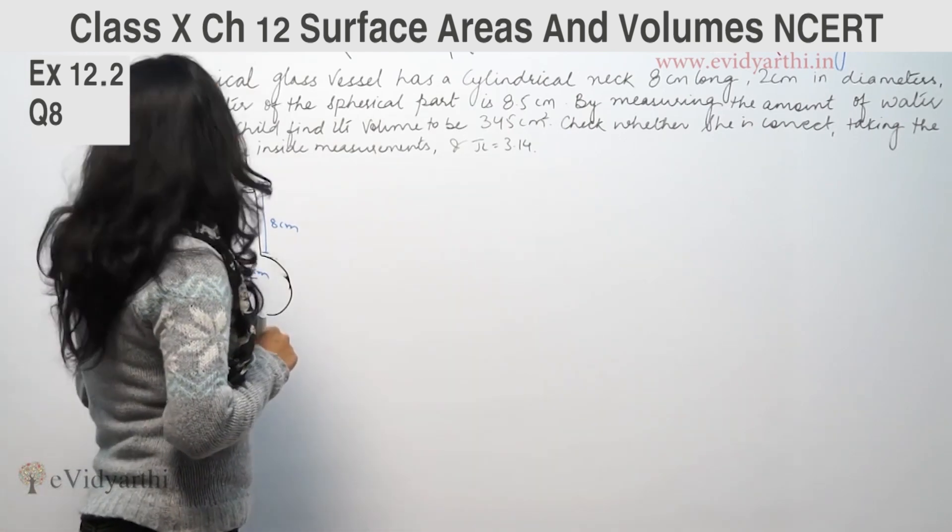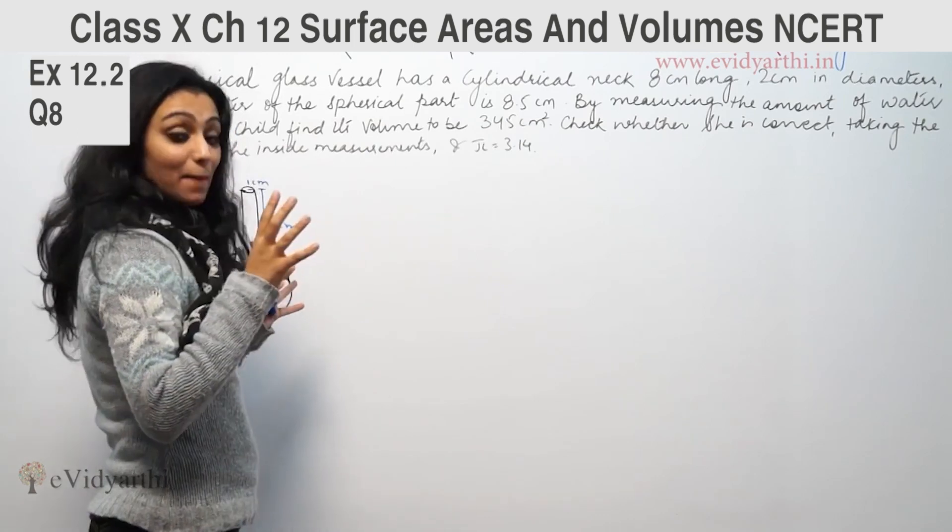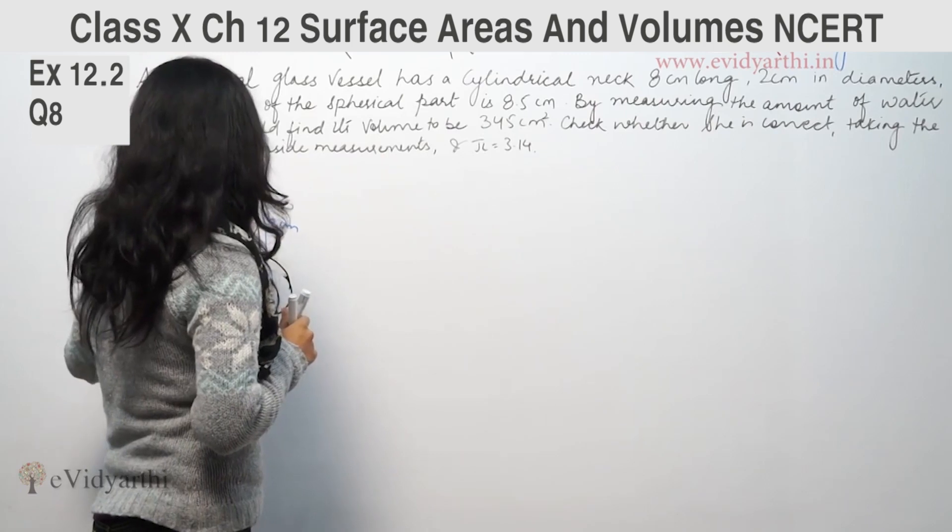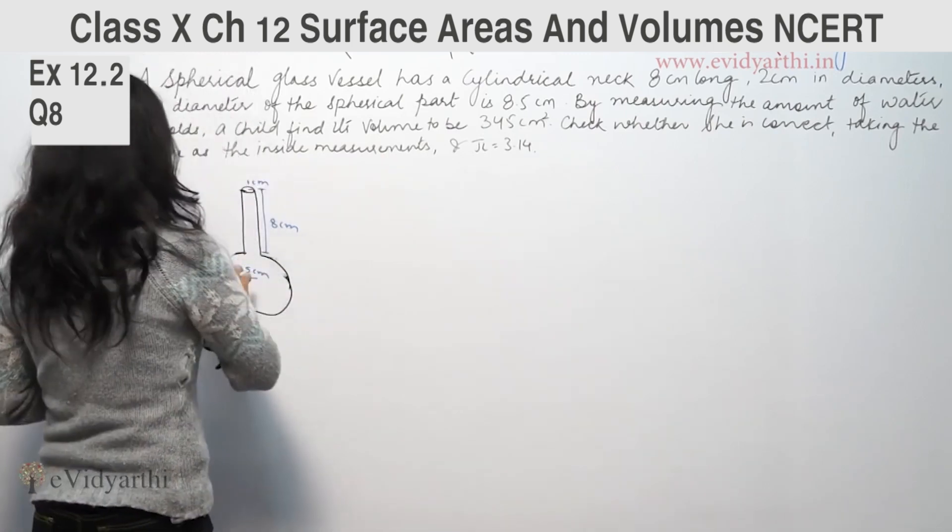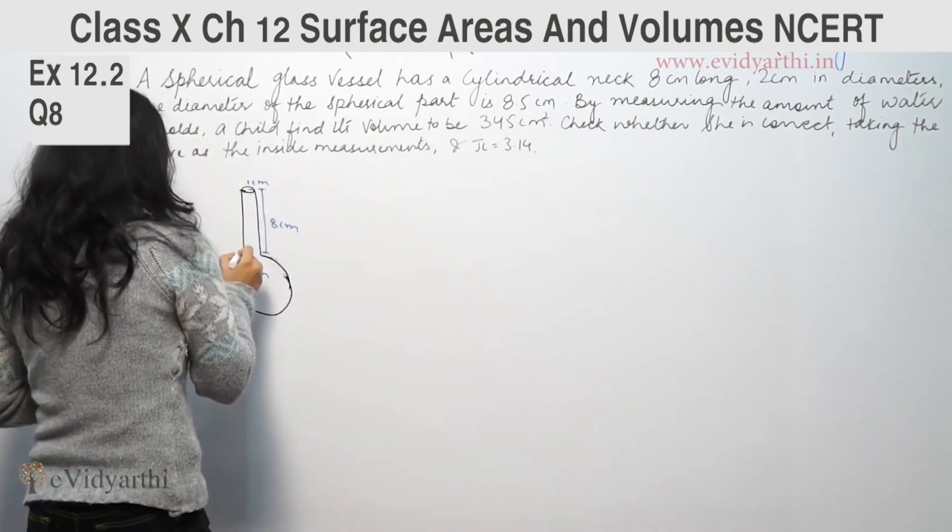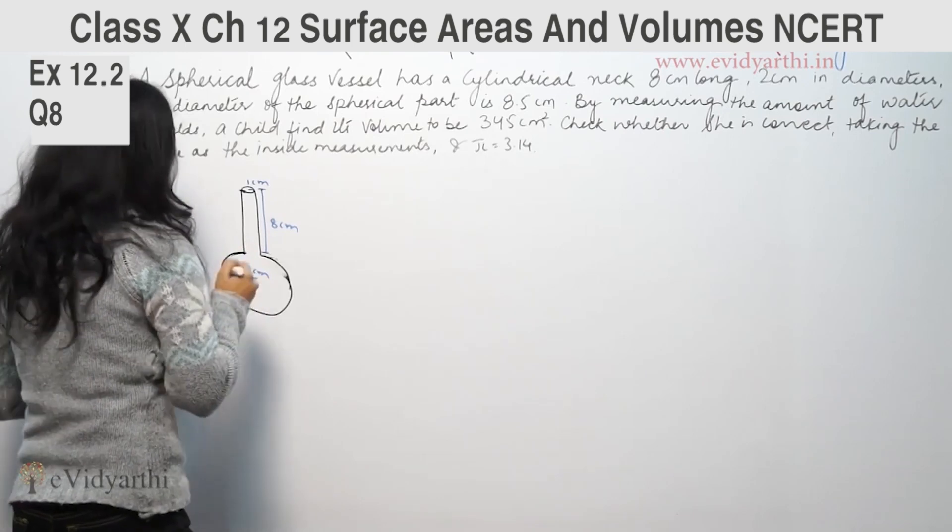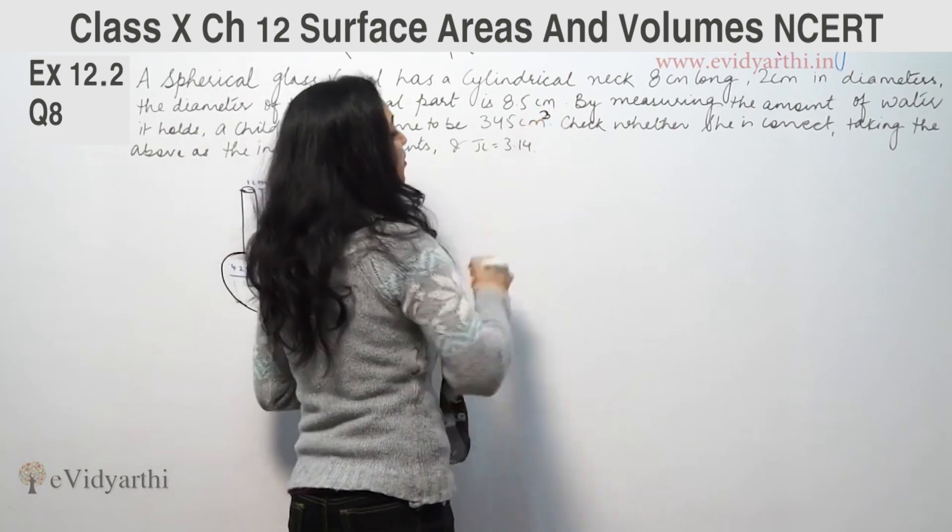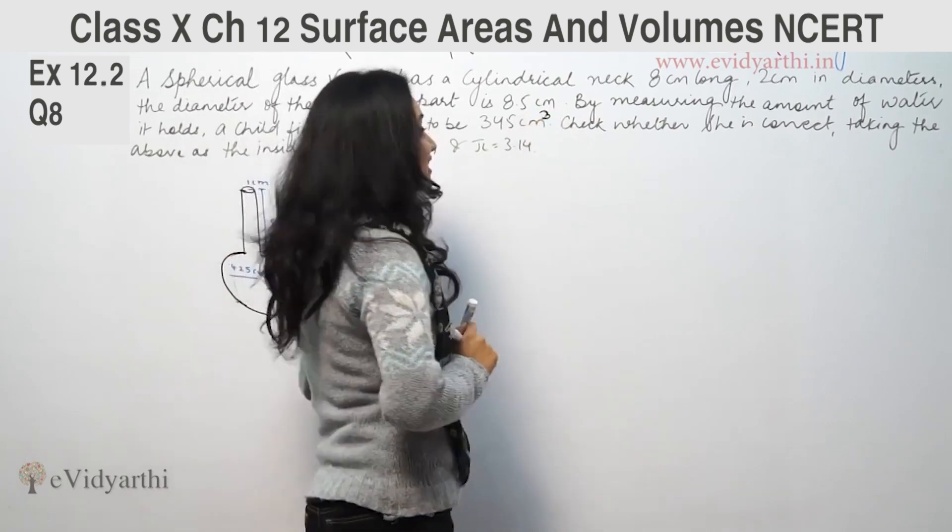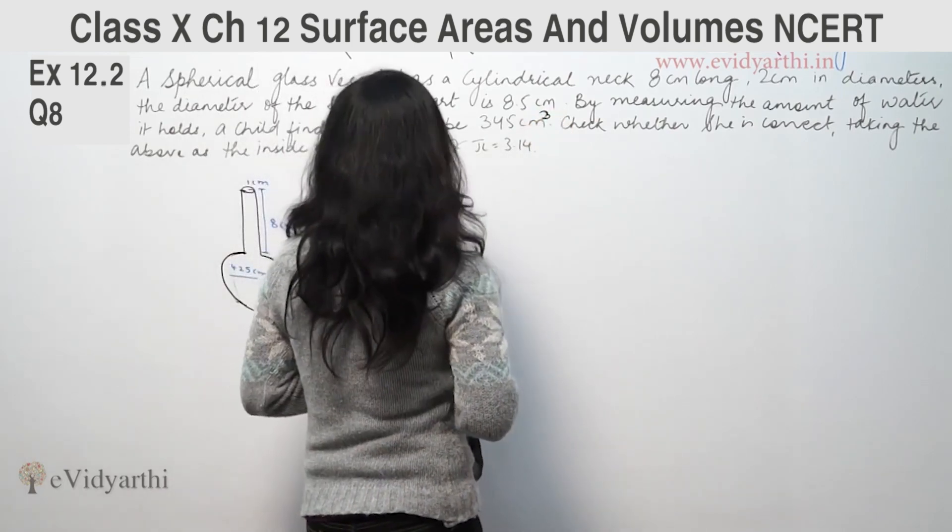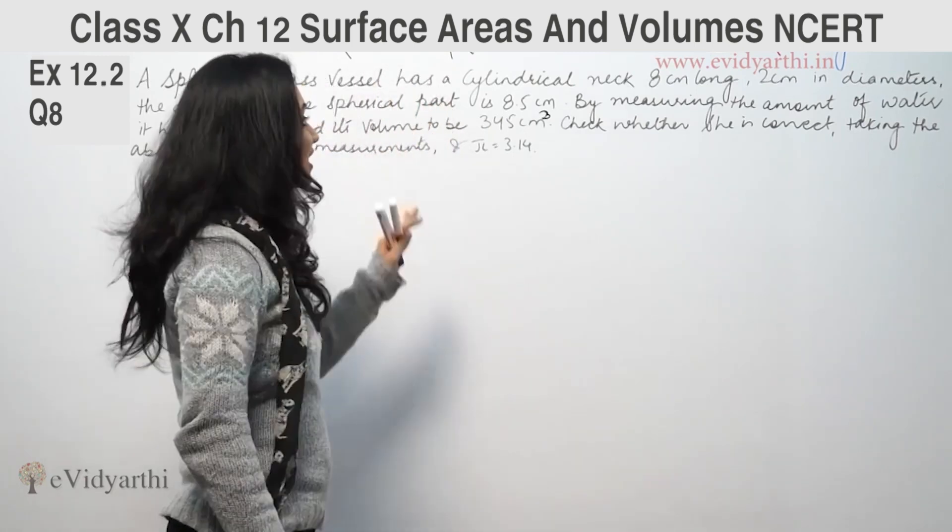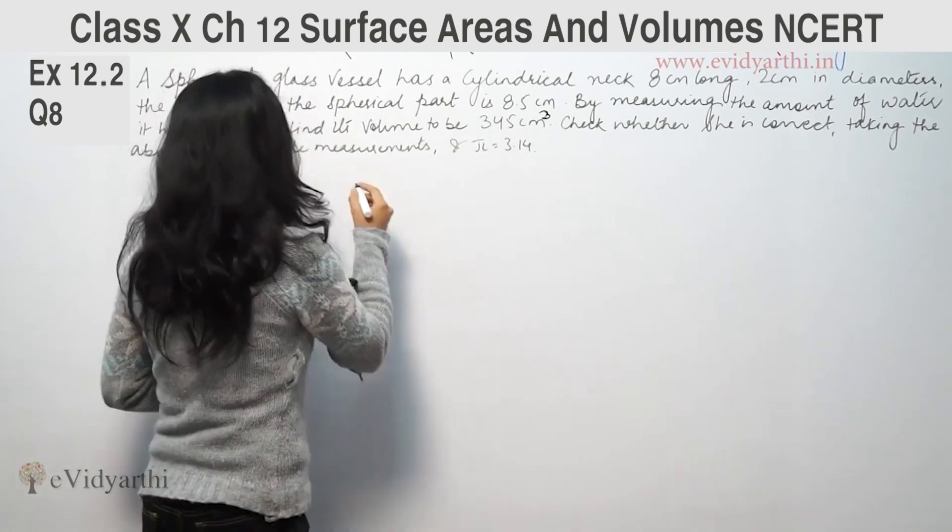By measuring the amount of water it holds, a child finds its volume to be 345 cm³. Check whether she is correct, taking the above as the inner measurements and π as 3.14. We need to verify if the answer is correct with the measurements given.